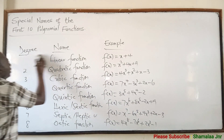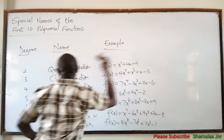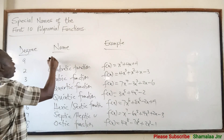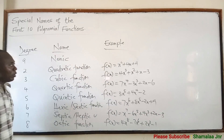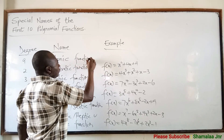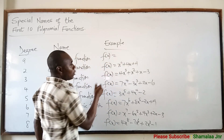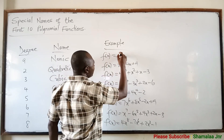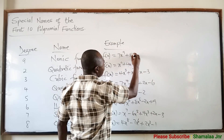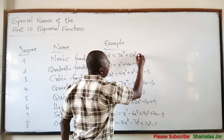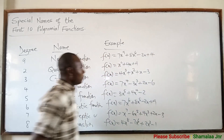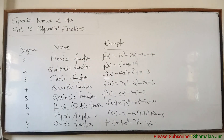When the degree is 9, then you say that it is a nonic function. For example, L(x) = 7x⁹ + 8x⁶ − 2x + 4. This is a nonic function.